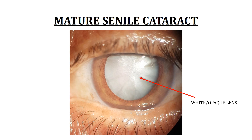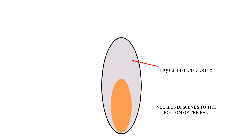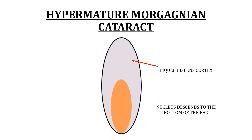Sometimes, due to delay in seeking treatment or ignorance, especially in developing countries, the patient does not come to the hospital even at the stage of mature senile cataract, and the process of lens degeneration continues. A time comes when the lens cortex becomes liquefied and the nucleus descends down to the bottom of the bag due to the effect of gravity. This stage is known as hypermature Morgagnian cataract.